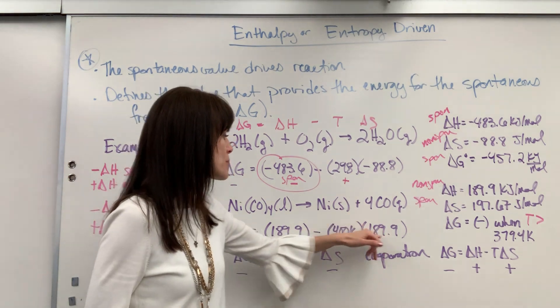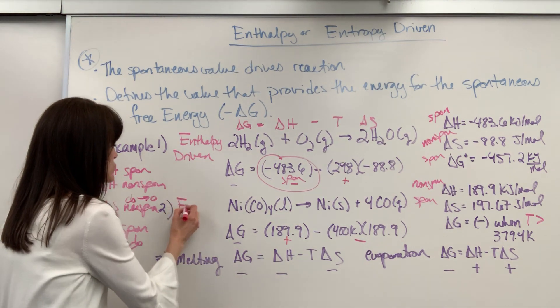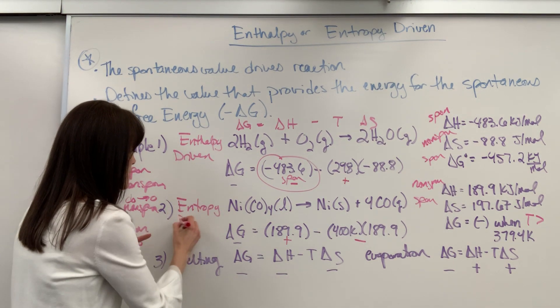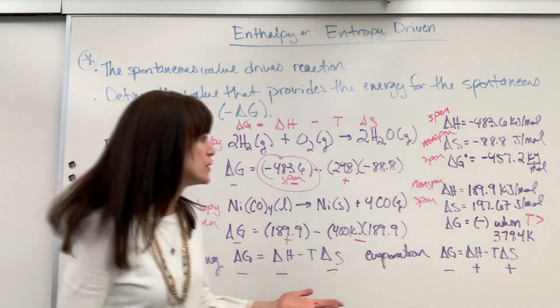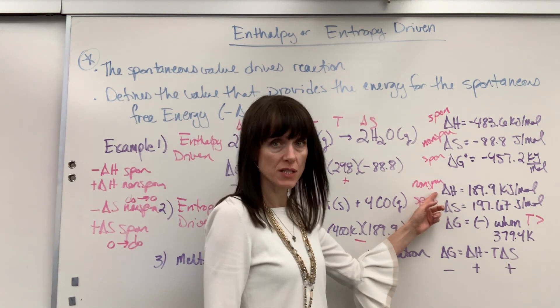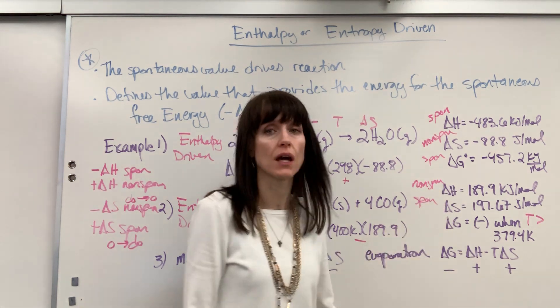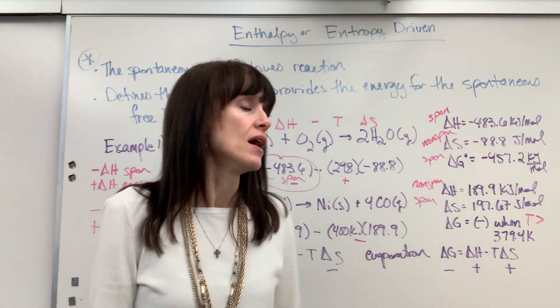This is what, in part, is providing the energy for this to be negative. So that will be entropy-driven. Now, two words on this. Again, if you wanted to do this really fast, you just look at the signs in delta H and delta S. Delta H is non-spontaneous, delta S spontaneous. And you say, oh, because delta S is spontaneous, that is entropy-driven.